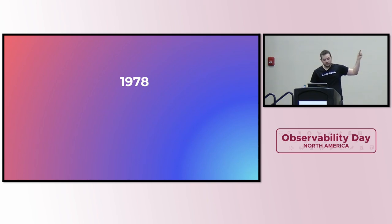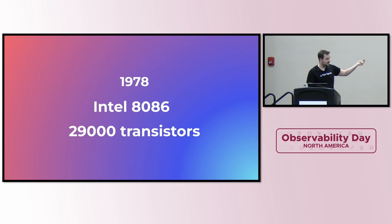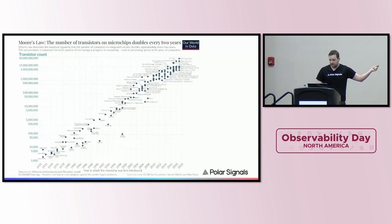Then, fast forward to 1978, we get another chip and we have 29,000 transistors. You probably already know where I'm going with this. This is something that one of Intel's founders coined as Moore's Law. Initially, he said every year the number of transistors is going to double. Later retracted that statement and said every two to three years. Originally, this was a prediction that this is how transistors are going to behave. Eventually, it became actually a goal of